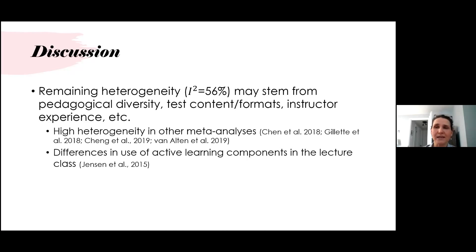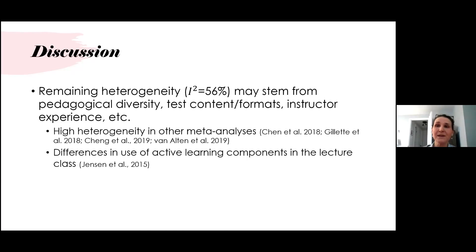Differences in the use of active learning components are another source of heterogeneity. For instance, the one study in which the lecture section performed better than the flipped section may be due to the regular class being what they dubbed a 'super lecture,' whereby students were given access to the same online lectures as the flipped classroom students and also used content-based clicker questions, in-class quizzes, and other in-class activities. This suggests that going beyond strictly chalk-and-talk and including active components in the traditional lecture class may minimize differences between lecture classes and flipped classes.